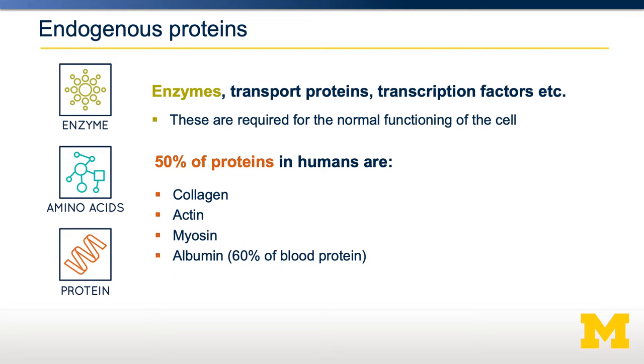Collagen is found in skin, hair, and other connective tissues. Actin and myosin are present in our muscles. Albumin comprises more than 60% of all the proteins in our blood. What that means is if we are limiting in the amount of dietary protein we intake, the first things we're going to notice are related to decreases in collagen, actin, myosin, or albumin.